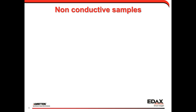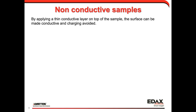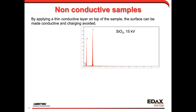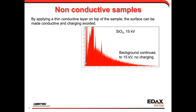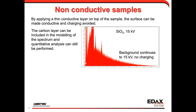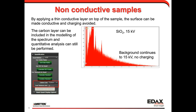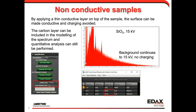To eliminate charging, we can apply a coating. For EDS analysis, carbon coating is standard. On a carbon-coated SiO₂ glass sample at 15 kV, we see the background continues all the way out to 15 kV — no charge buildup. The added carbon layer can be corrected for in most EDS software. In TEAM software there's a carbon coat correction where you enter the coating thickness, and quantification still comes out accurate — in this SiO₂ example, the atomic ratio is spot on.